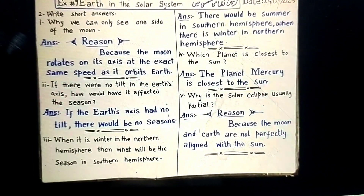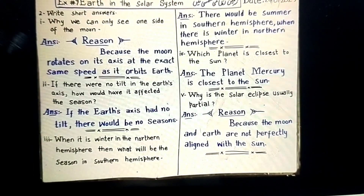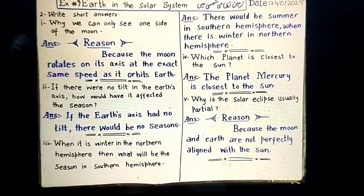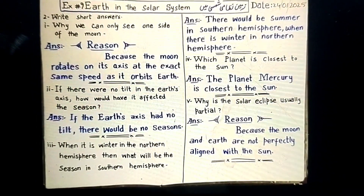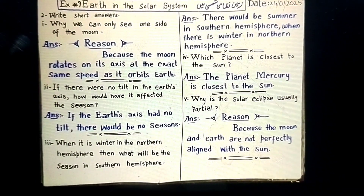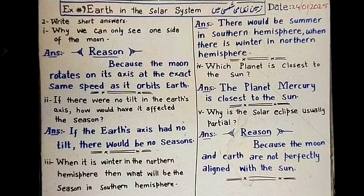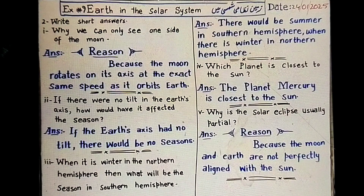Why can we only see one side of the moon? Because the moon rotates on its axis at the exact same speed as it orbits the Earth, so we can only see one side of the moon.